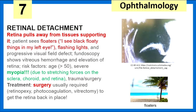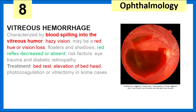Retinal detachment — the retina pulls away from the tissues supporting it, and the patient sees floaters. Fundoscopy shows vitreous hemorrhages and elevation of the retina. Risk factors include age over 50 and severe myopia, due to stretching forces on the sclerochoroid and retina. Treatment is usually surgery to get the retina back in place. Vitreous hemorrhage is characterized by blood spilling into the vitreous humor — the patient has hazy vision with possible red hue or vision loss, the red reflex is decreased or absent, and we treat with bed rest, elevation of the head, and possibly photocoagulation or vitrectomy.